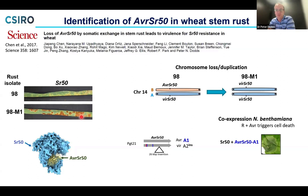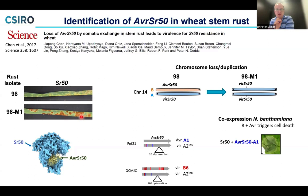One way we can show the function of these proteins is to co-express the resistance protein and the avirulence protein in a heterologous system — in this case Nicotiana benthamiana, a tobacco species. When you have a recognition interaction, you see cell death. We see a zone of cell death where we're co-expressing the proteins. The only naturally virulent strain on SR50 contains a different version of the gene with a number of amino acid changes that is not recognized — so when we do the co-infiltration, there's no interaction.